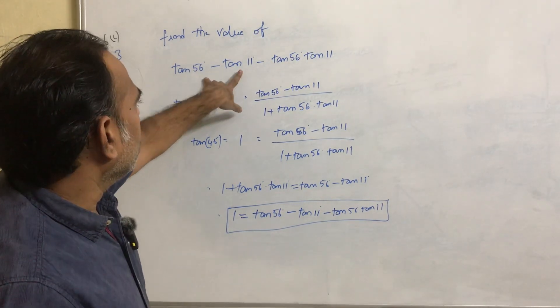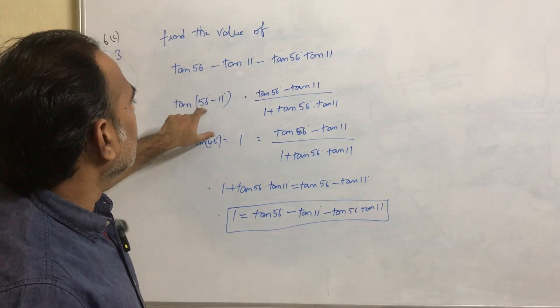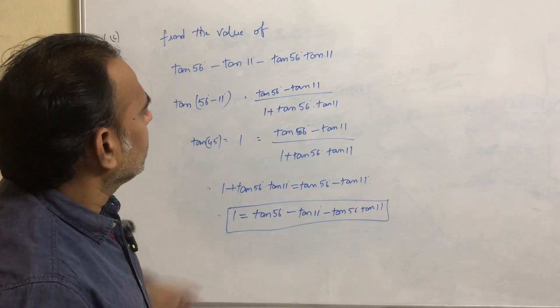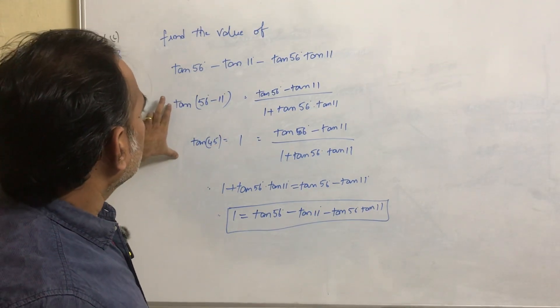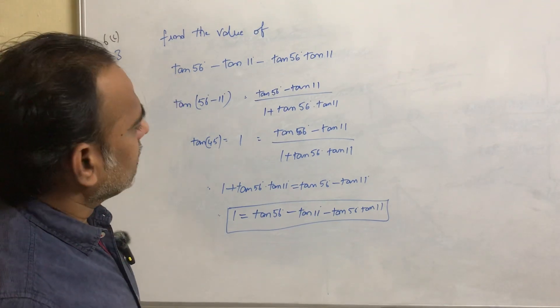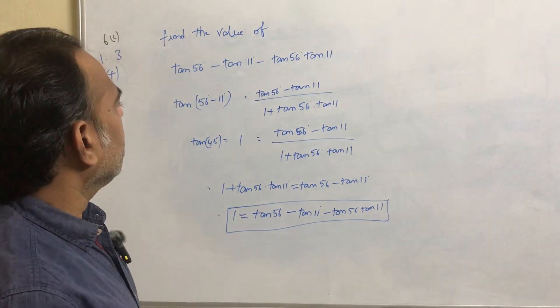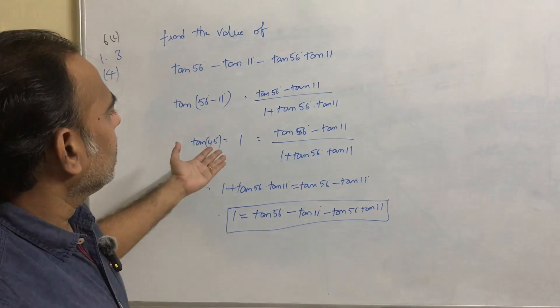Just by looking at this, this is in the form tan a - tan b - tan a tan b. That's why we need to consider tan(a - b). If you get these type of questions, just note it down. If you have any doubts or want notes in future, write in the comment section.